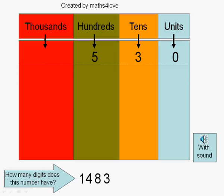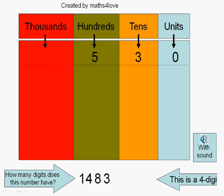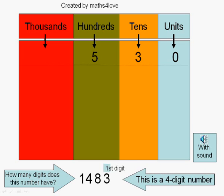How many digits does this number have? This is a 4-digit number. 1st digit, 2nd digit, 3rd digit.